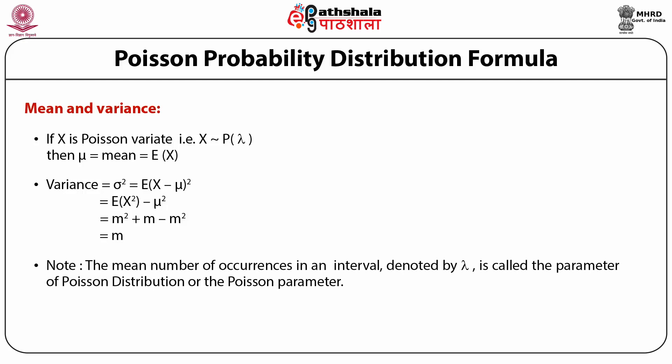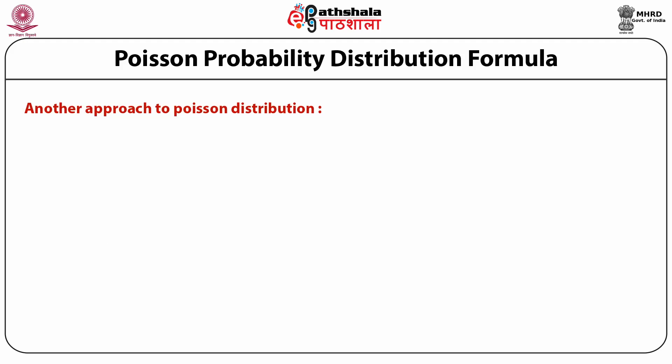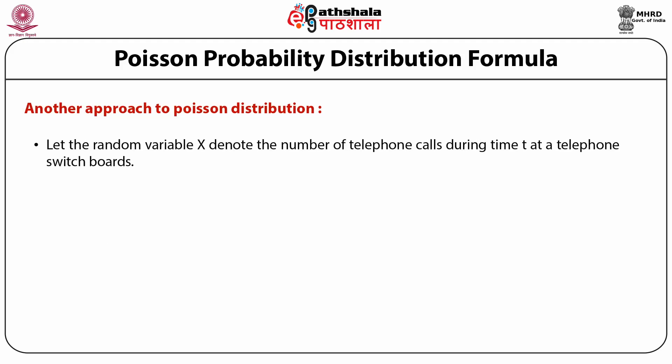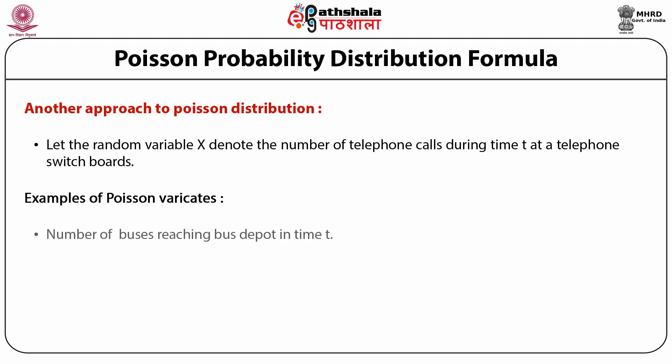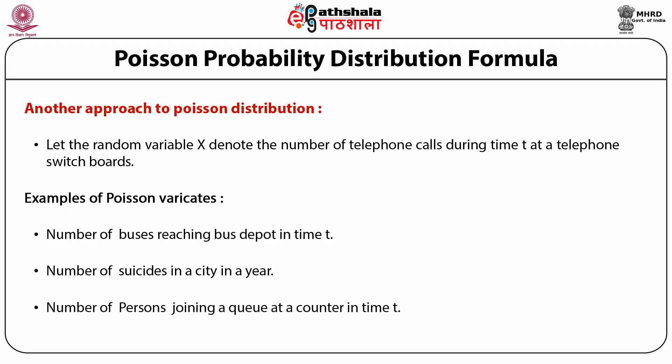Note that the mean number of occurrences in an interval, denoted by lambda, is called the parameter of Poisson distribution or Poisson parameter. Another approach to Poisson distribution: let the random variable x denote the number of telephone calls during time t at a telephone switchboard, assuming calls are independent and lambda denotes the mean arrival rate. Other examples include the number of buses reaching a bus depot in time t, number of suicides in a city in a year, and number of persons joining a queue at a counter in time t. Here lambda is the mean.